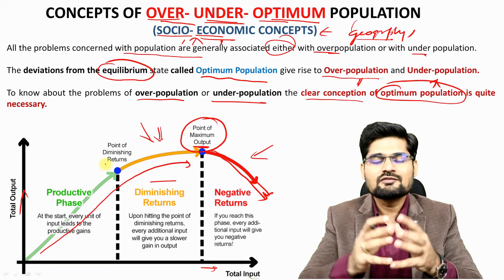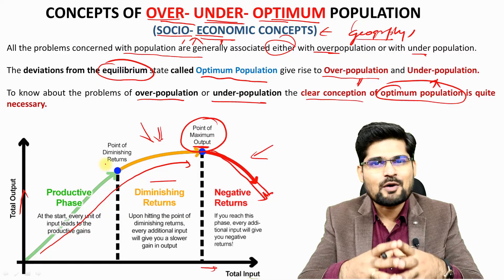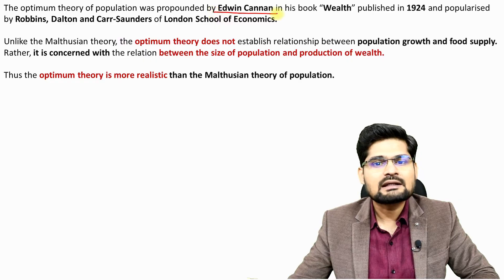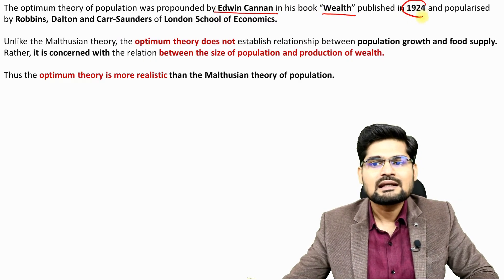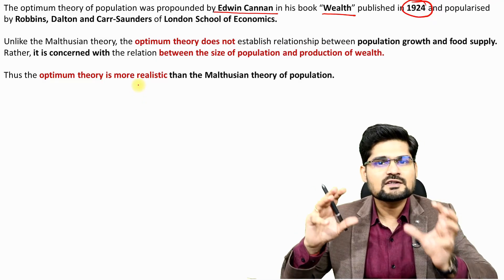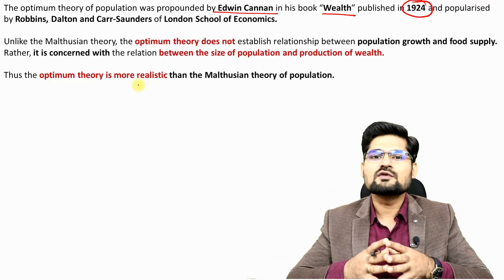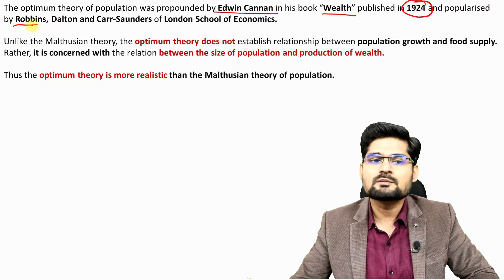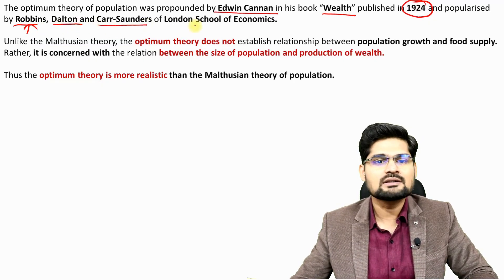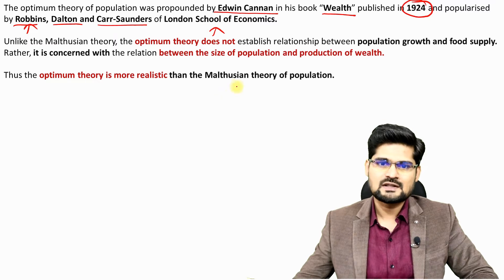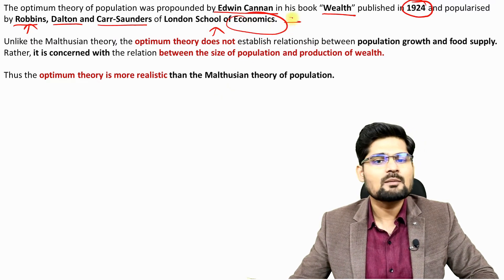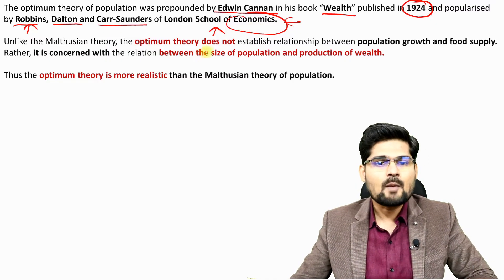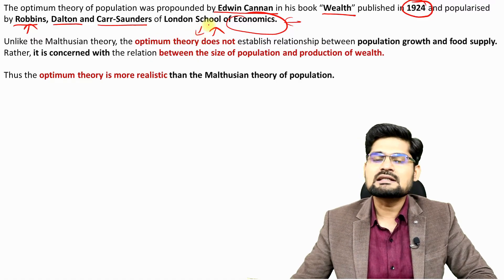Optimum population, overpopulation, and underpopulation are inseparable concepts. To understand over and under, we must first understand the optimum population theory. This concept comes from the great scholar Edwin Cannan, in his book 'Wealth' published in 1924 — between the two World Wars, when global economics was changing greatly. It was further popularized by scholars like Robbins, Dalton, Carr-Saunders, and others from the London School of Economics.